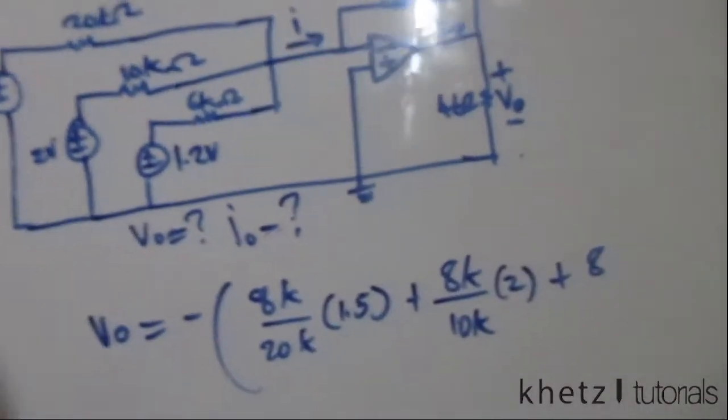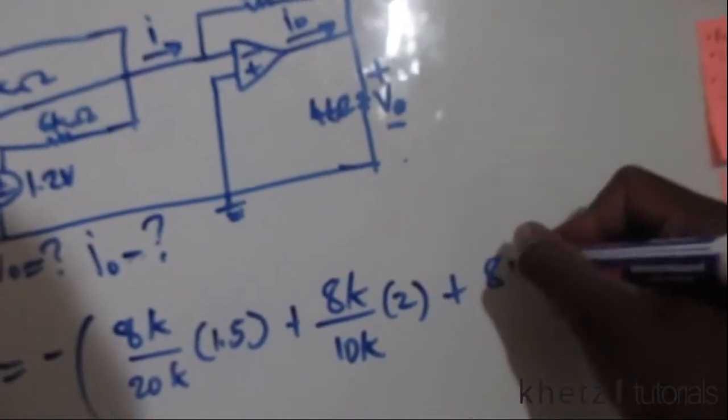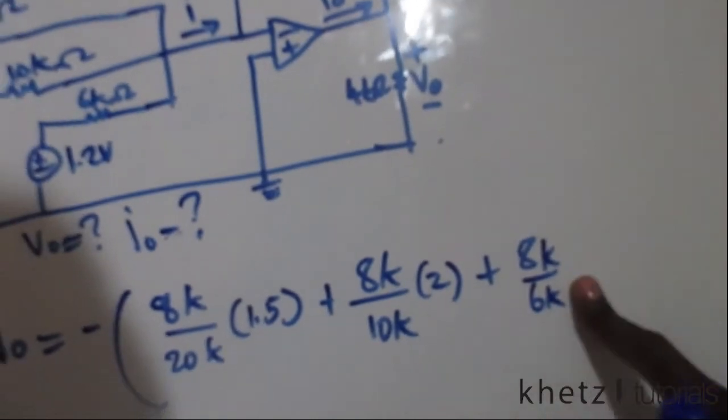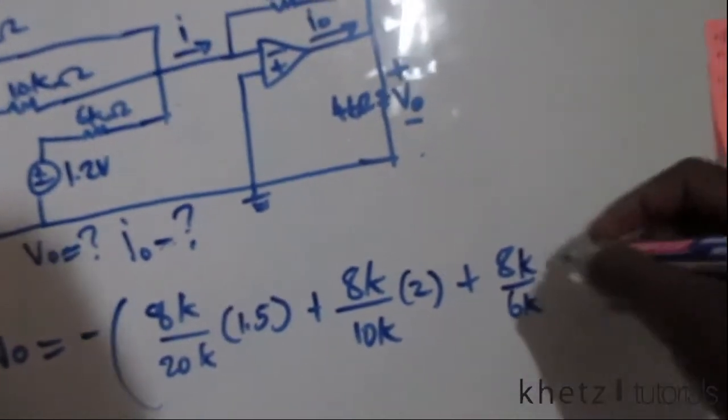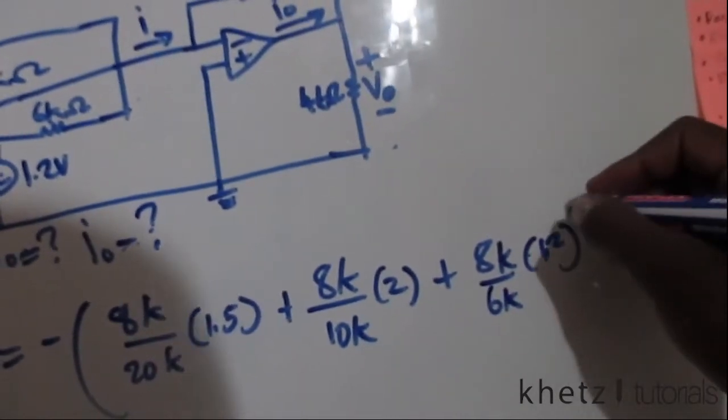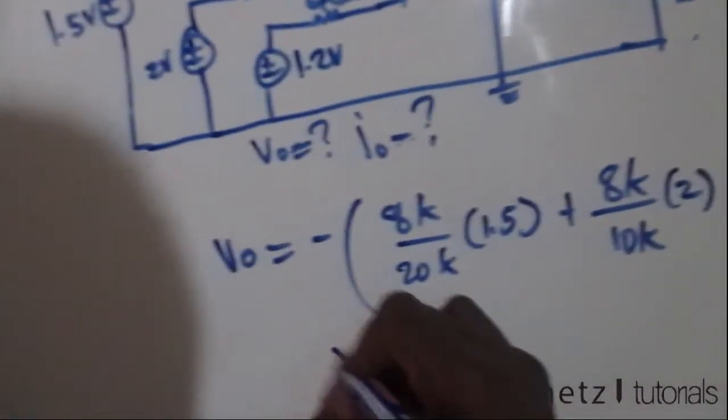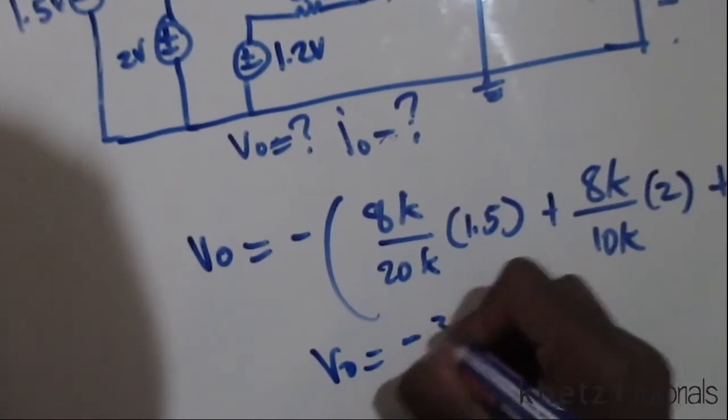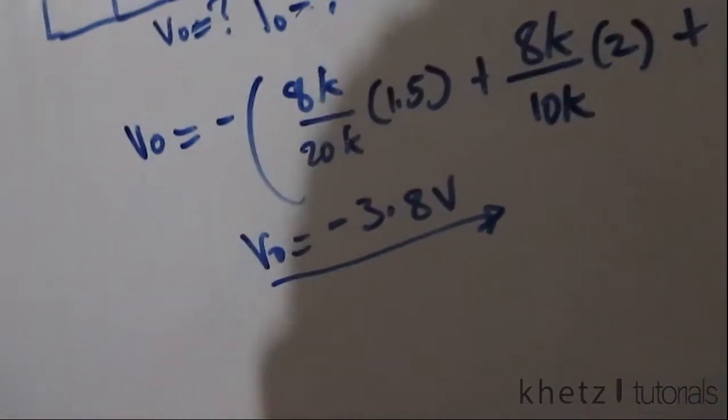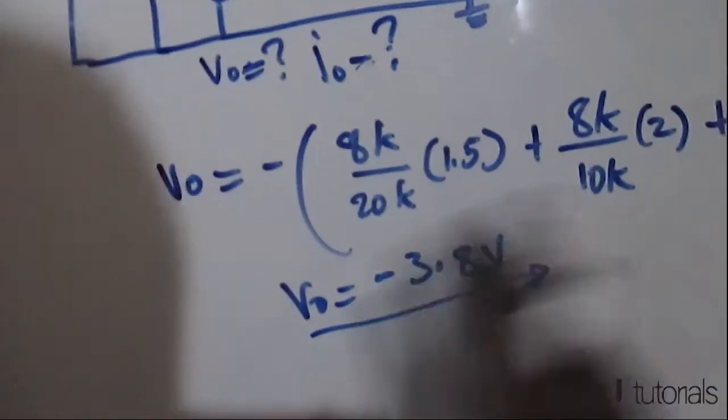Finally, you do this for whatever number of inputs you have. In this case, we have only three inputs, so this is where you're going to stop: divided by the resistor value which is in the path, and then multiply by the voltage value in the same path. Now, this vo should be negative 3.8 volts. You can just quickly punch that into your calculator and this is what you get.